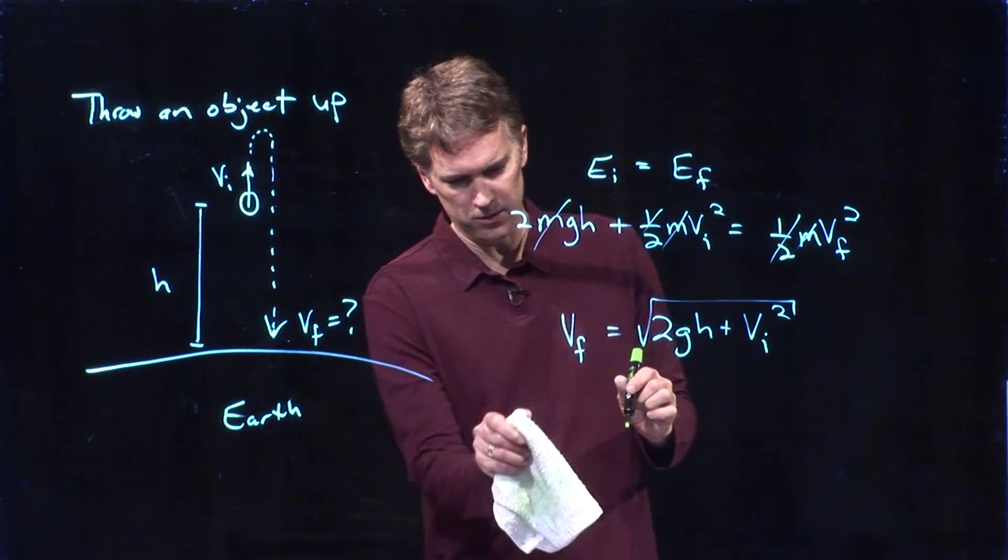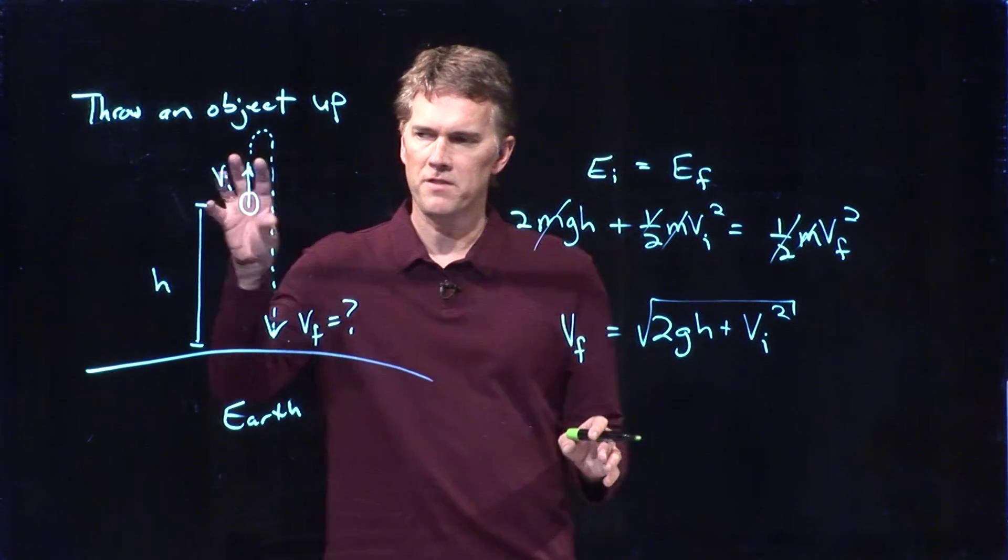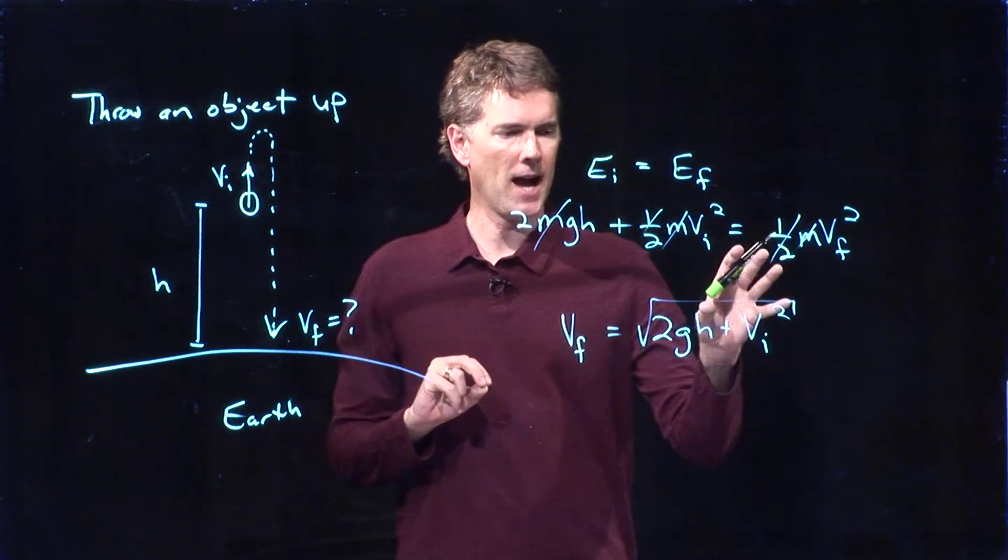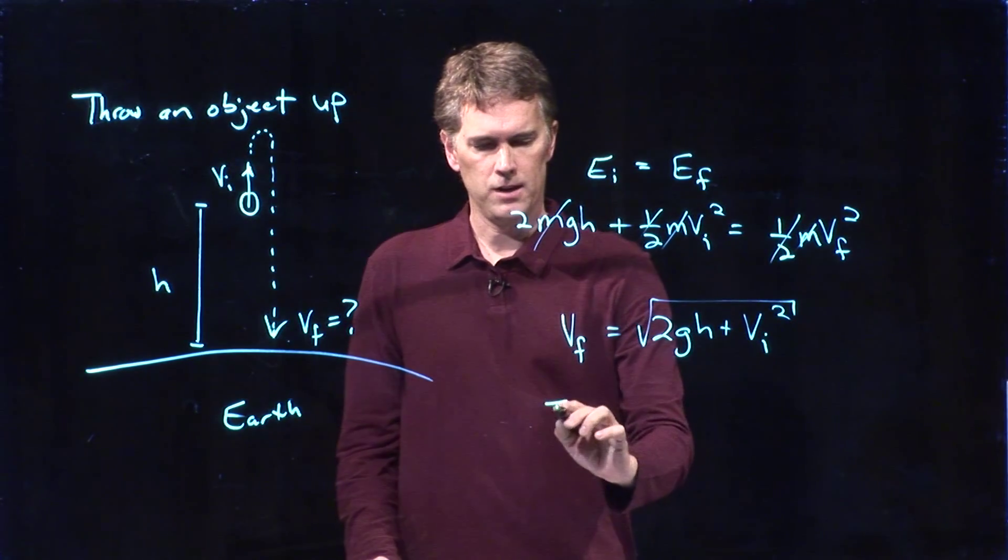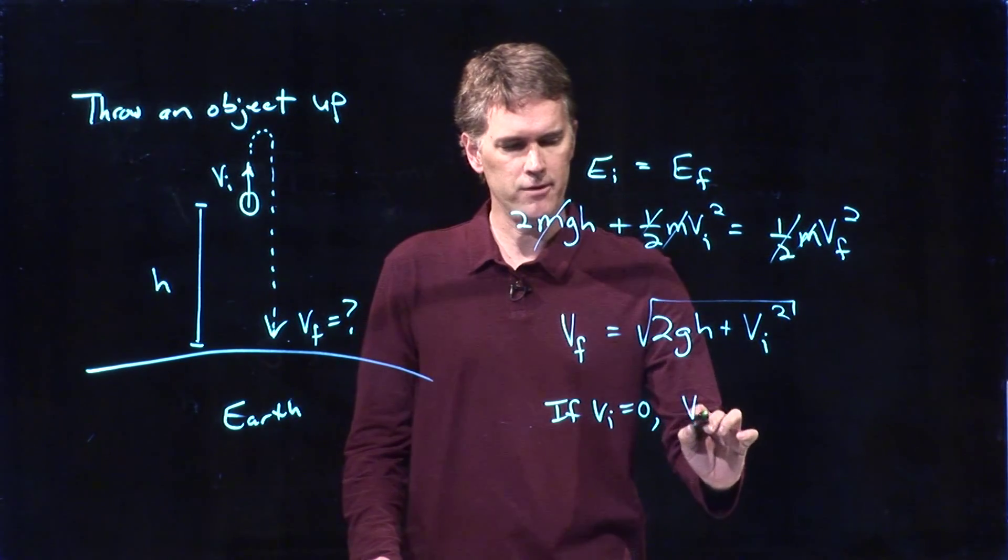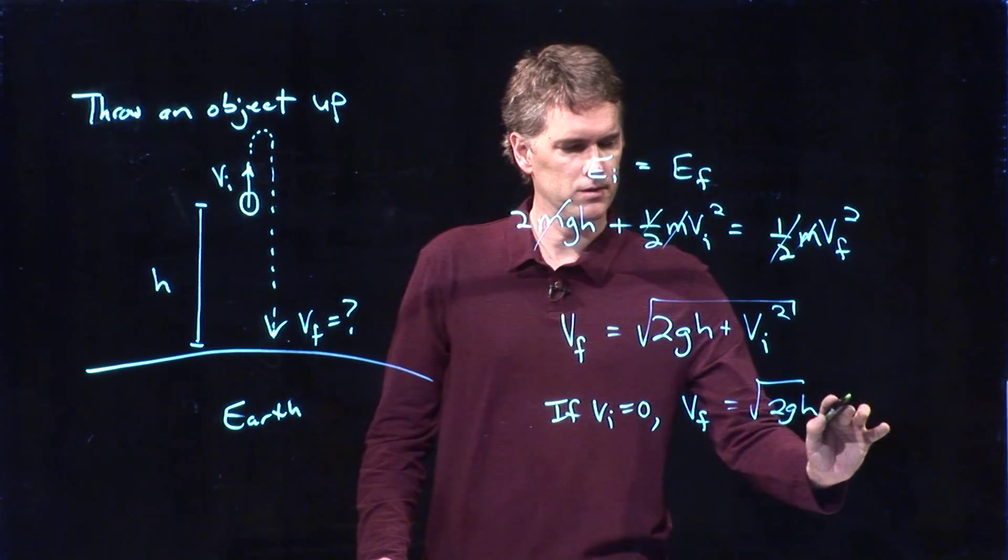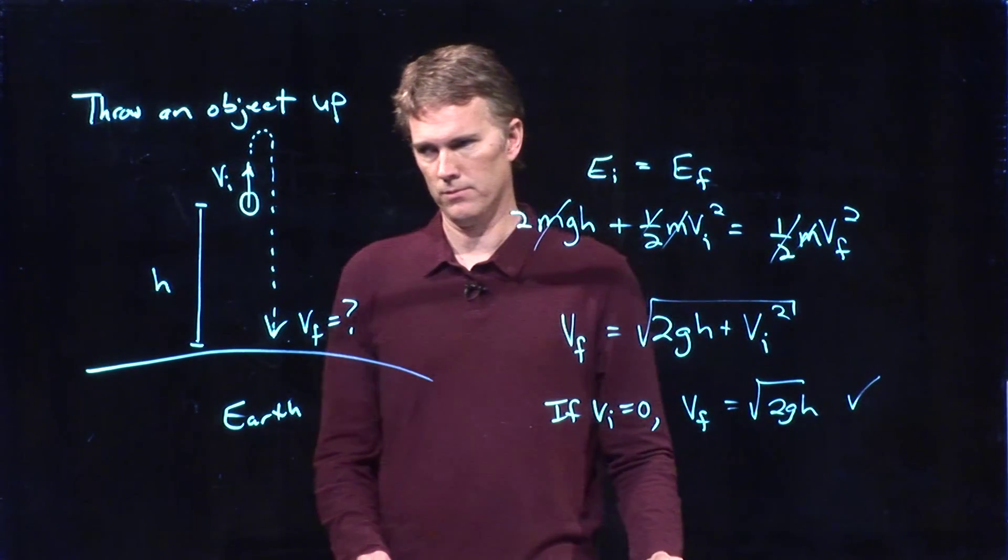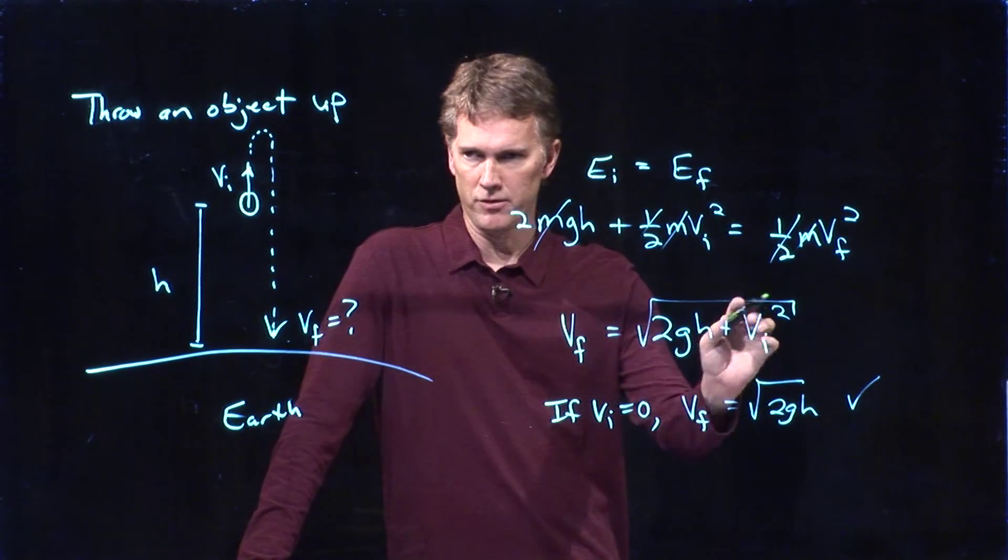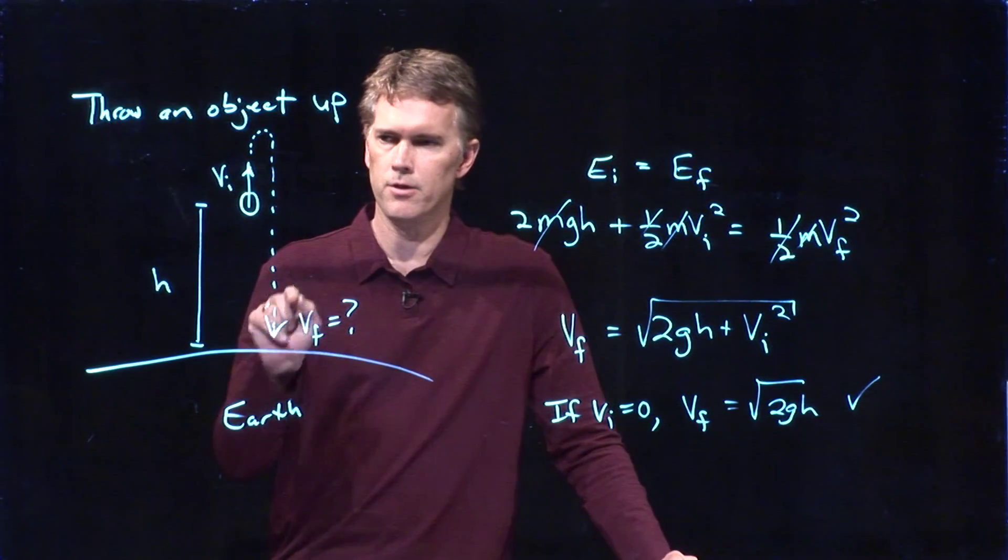Now you look at this result and you want to make sense of it. With what we just did where we dropped the object, that would be the case where vi equals 0. And so if vi equals 0, then vf is just square root of 2gh, like we found before. If we increase vi, then it's going to hit the ground even faster.